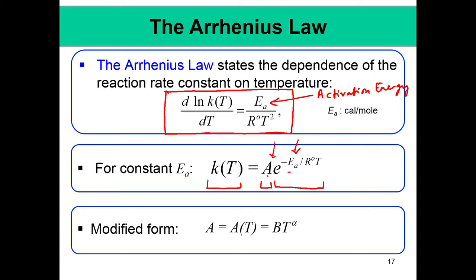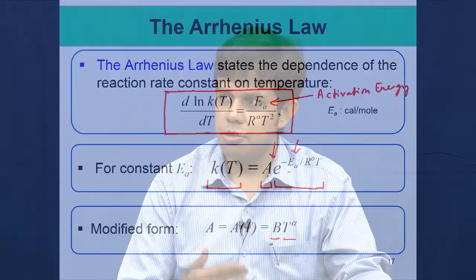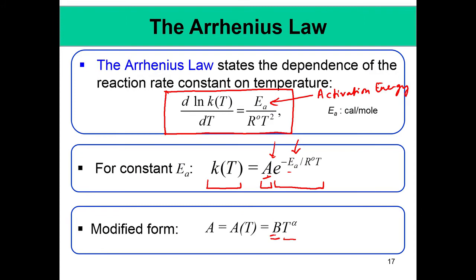In the modified form, A also depends on temperature and can be written as A = B · T^α, where α is a constant. So there are three constants needed for a comprehensive reaction mechanism: B, α, and EA. Reaction mechanism databases list these three parameters for each reaction.